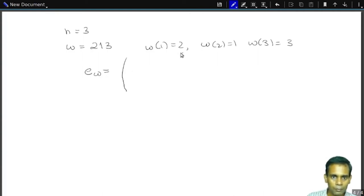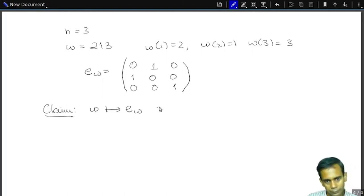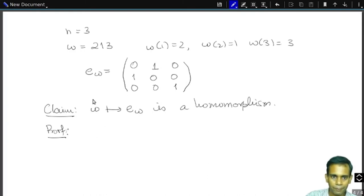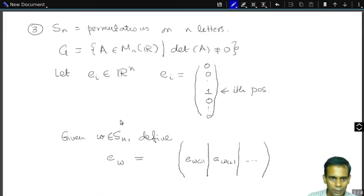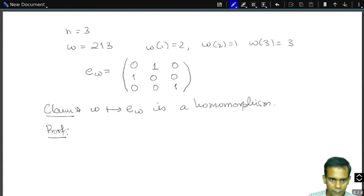So I claim that this is a group homomorphism. To prove this, we'll just show that if we take, so we want to show that, so that we're calling this, we'll call it this map ω goes to E_ω, let's give it a name. Let's just call it F.